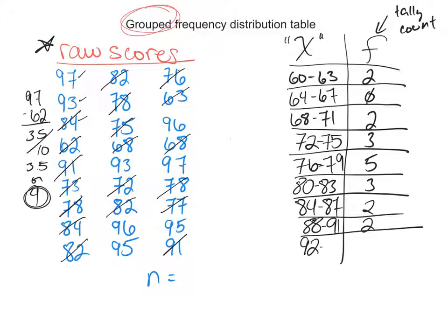92 to 95, I have quite a bit. One, two, three, four. My last one, 96 to 99, I have one, two, three, four again. So I have crossed off all my raw scores, and I have created a frequency distribution table based on the interval of four, because I took my highest number, 97 minus 62, gave me 35, divided by 10. So it's 3.5, and I rounded up to four.